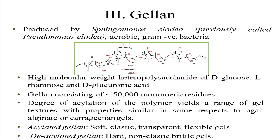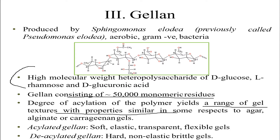Previously we discussed xanthan and dextran EPS. Now we'll start with gellan, another exopolysaccharide. It is produced from Sphingomonas elodea, also previously called Pseudomonas elodea — an aerobic gram-negative bacterium with a high molecular weight. It consists of 50,000 monomeric residues. Gellan yields a range of gel textures with properties similar to agar, alginate, or carrageenan gels.